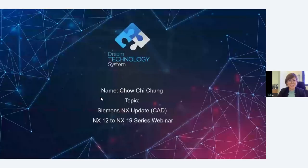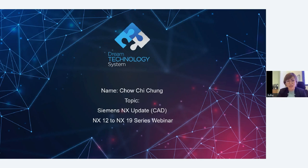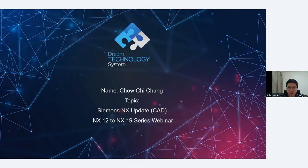That's all from my sharing — short and sweet. I'll pass the time to Chao, who will cover the key sharing today. Thanks Julie for the introductions. My name is Chao Yi Chong — you can call me Chao. I work as an application engineer at Dream Technology for about 15 years, mainly focusing on NX CAD portions and freeform surface modeling, as well as 3D scanning, inspections, and part analysis.